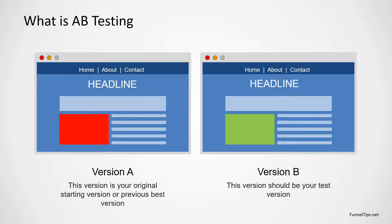In this example here, we can see we're running an A-B test and we're going to test the video area of the landing page. We've got our A version — the control is called the A version — and then the variant will be called the B version, and that's the one we're going to be using to test.